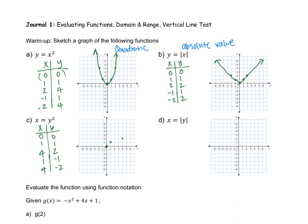If I plot the point (1, negative 1), 1 would be here and negative 1 would be right there. Then plotting (4, negative 2) would be right about here. Now I'm just going to connect the dots and make the curve. And there we go.